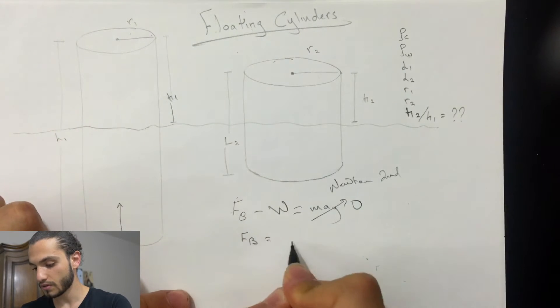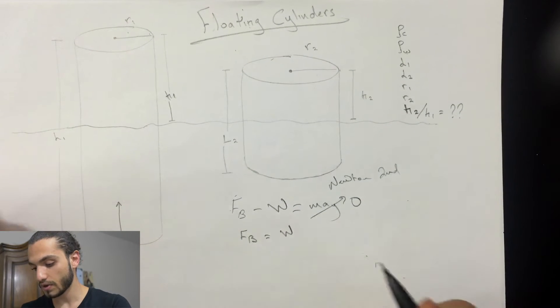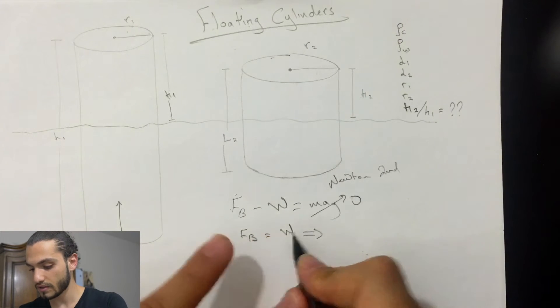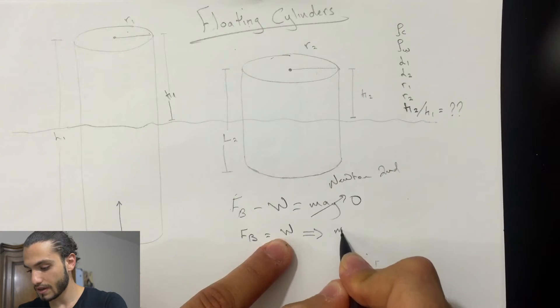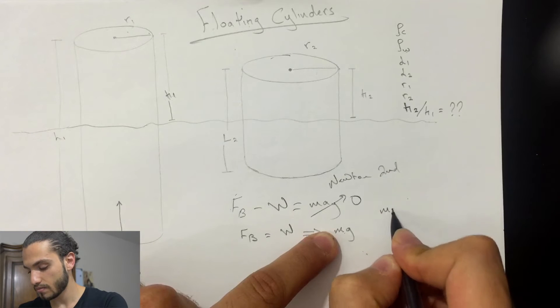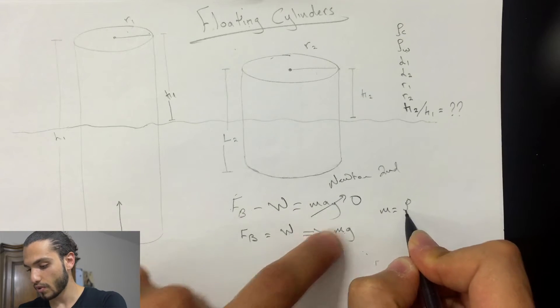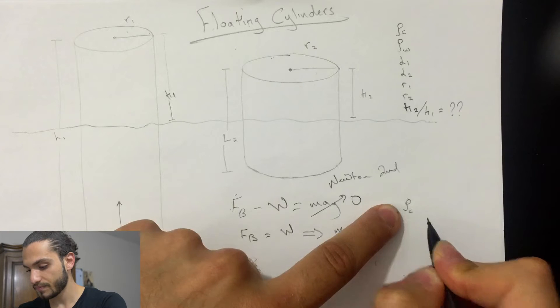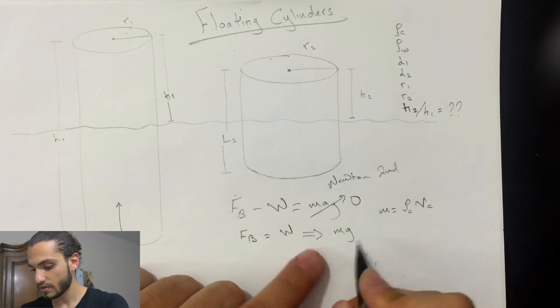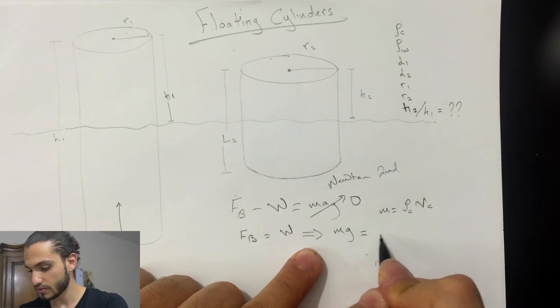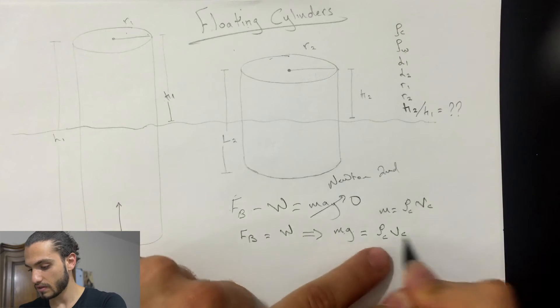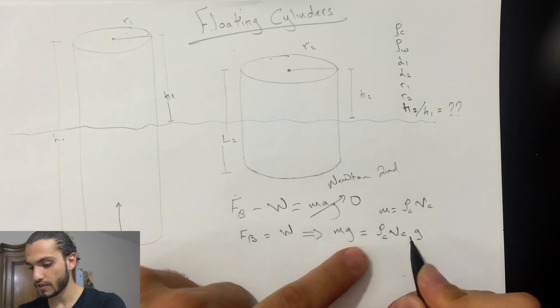So the buoyant force will be equal to the weight, weight of the cylinder. This is going to be equal to the weight of the cylinder. The mass is equal to rho of the cylinder times the volume of the cylinder.